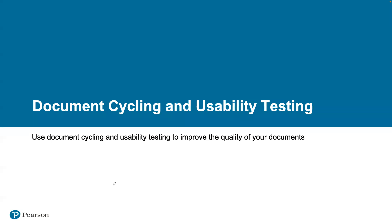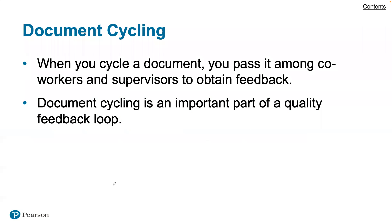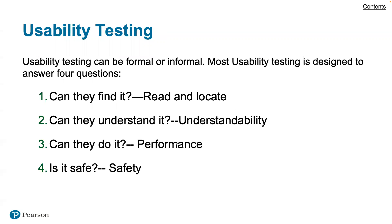For document cycling and usability testing, we can use these to improve the quality of documents. For cycling, you pass the document among coworkers and supervisors to obtain feedback — you're getting peer review to get impressions of what you've developed, creating an important quality feedback loop. For usability testing, it can be formal or informal, and is designed to answer four questions: Can they find it — can they locate specific information? Can they understand it — can they explain what you're trying to convey in their own words?